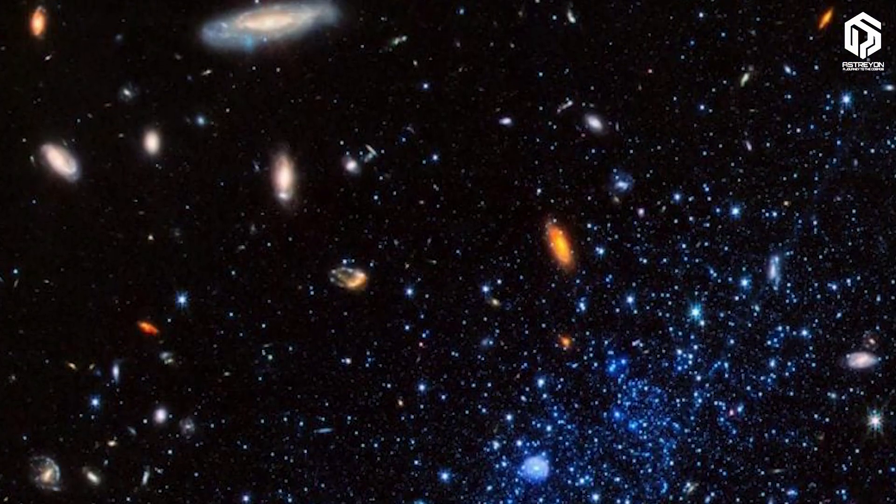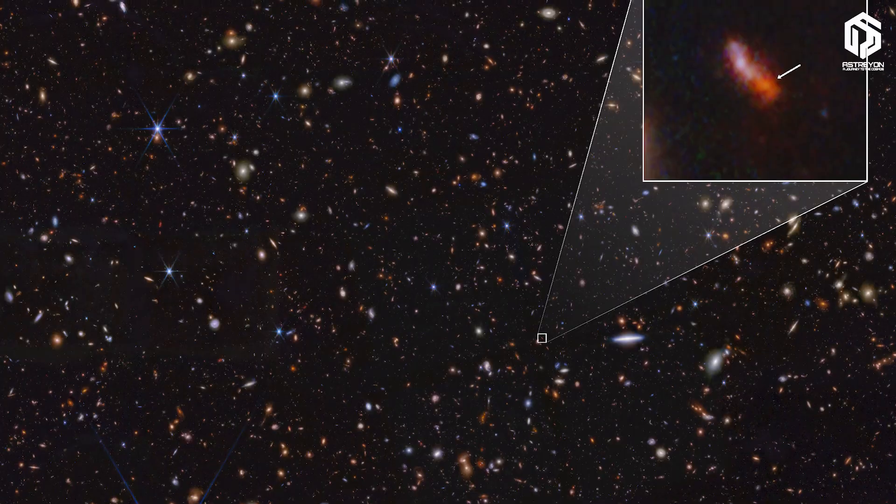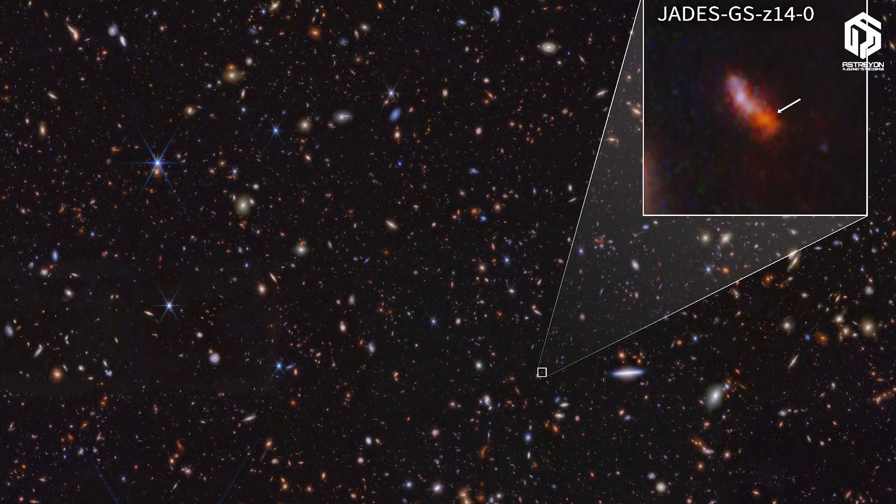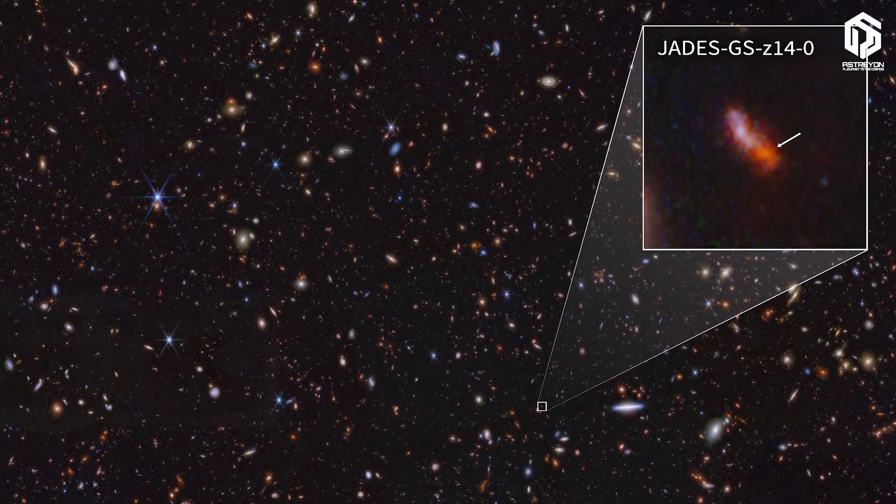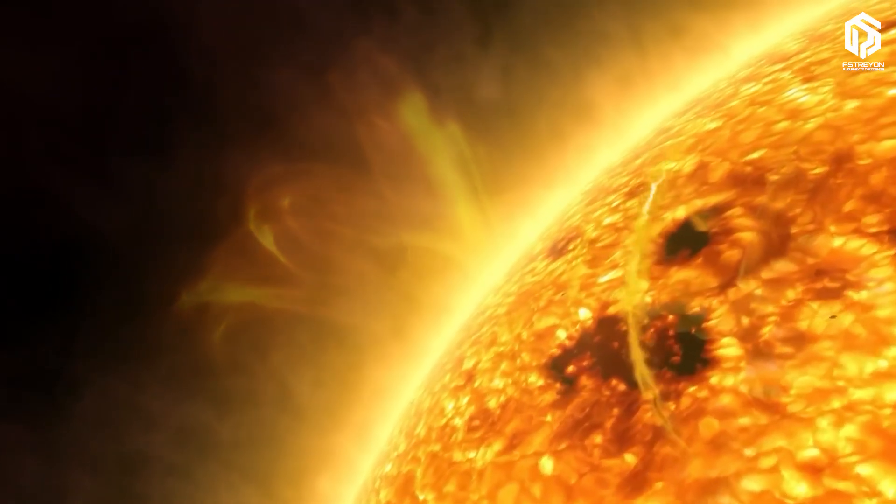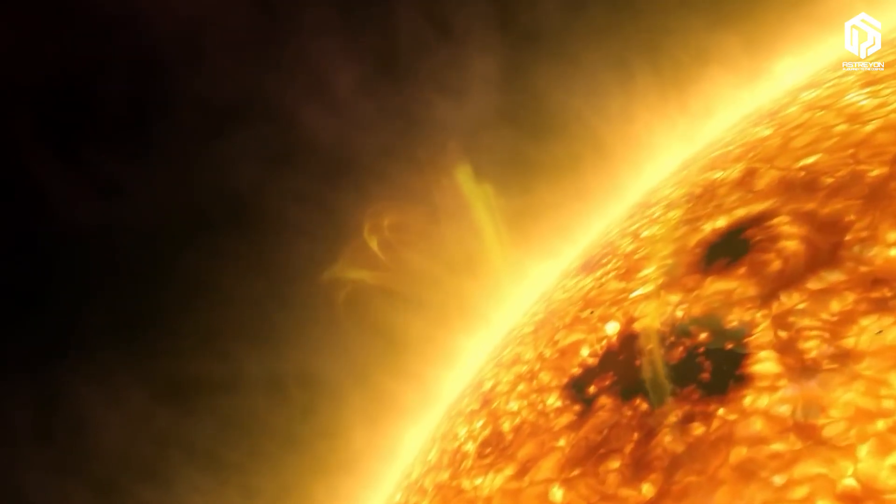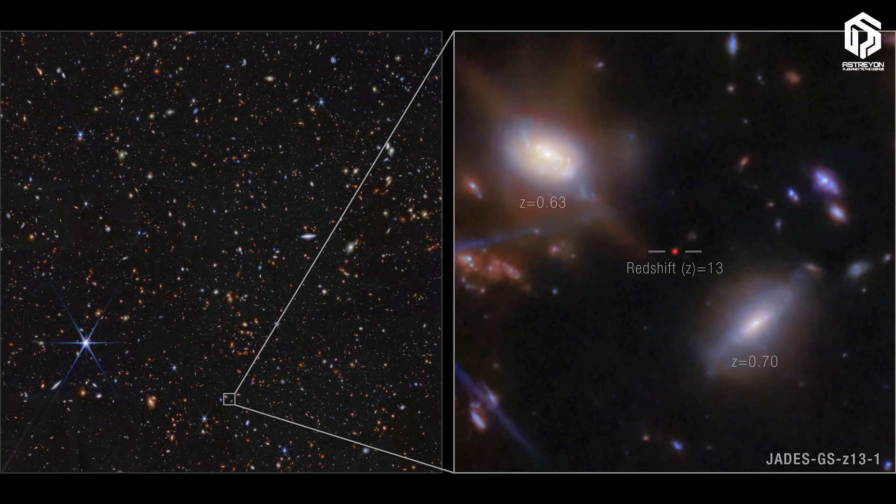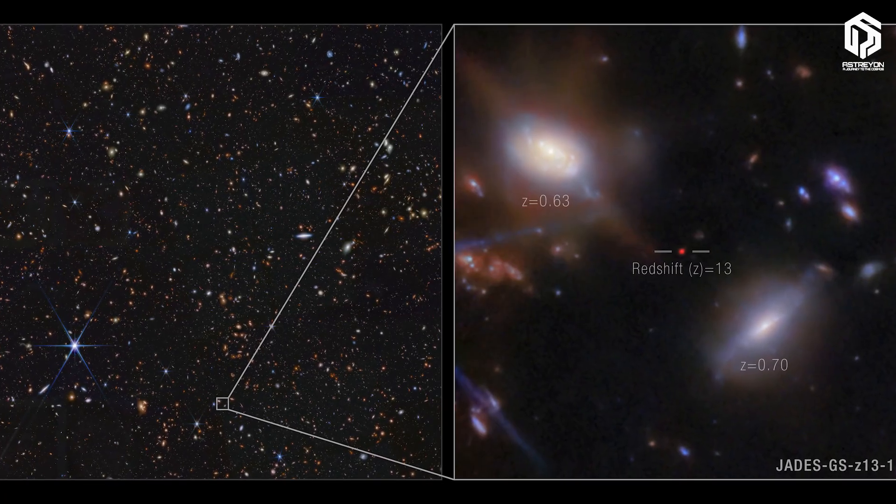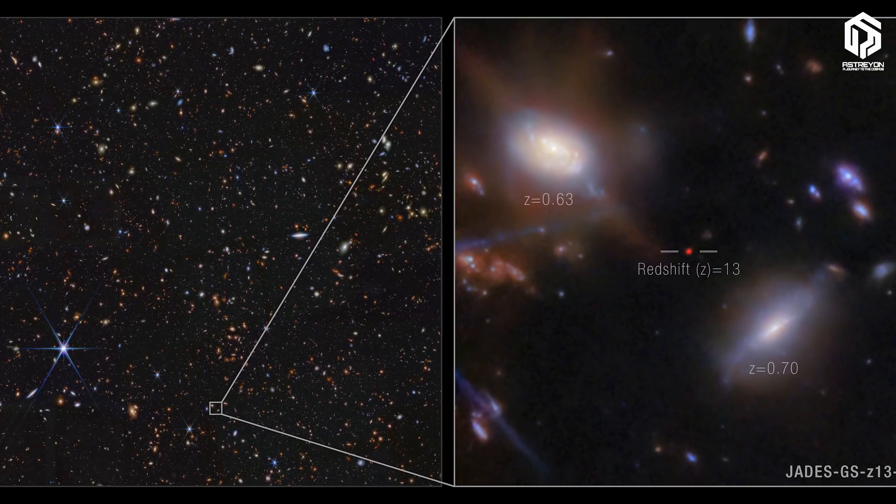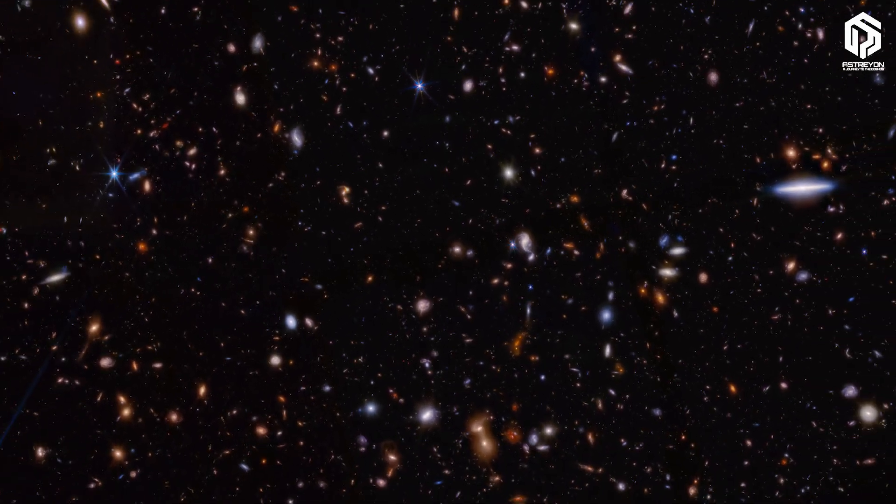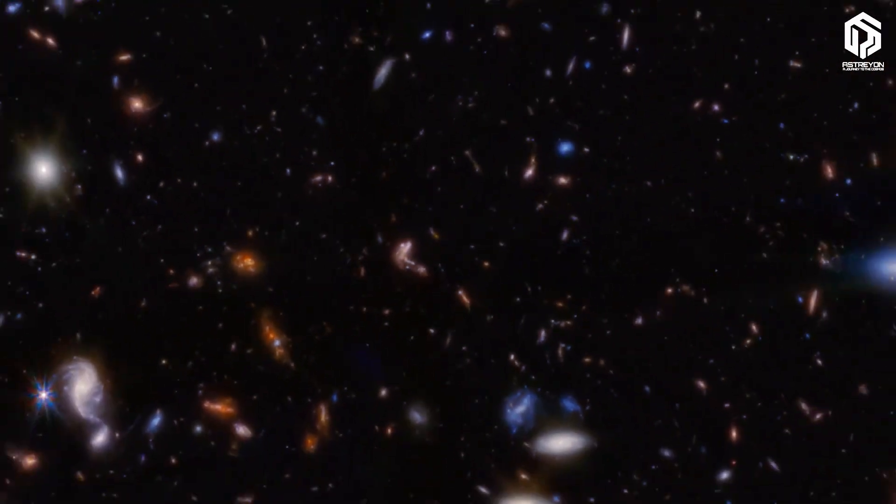However, research published by NASA showed that some of these galaxies are less massive than initially thought, as their light comes from young stars, not high mass, which saves the models but remains controversial. And these findings challenge models of early galaxy formation and may require revising parameters.